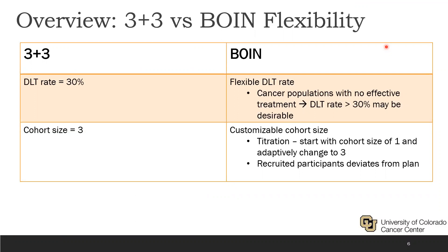The BOIN is much more flexible than the 3+3 design. The 3+3 design fixes the DLT rate at 30%, whereas the BOIN design allows this DLT rate to be customized by the user. This is important in cancer, for example, when there are subpopulations that don't yet have an effective treatment — in that case, physicians may feel that a DLT rate greater than 30% may actually be desirable. Additionally, the 3+3 design sets the cohort size to 3, while BOIN allows this to be altered.